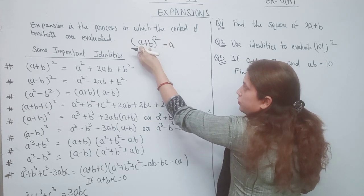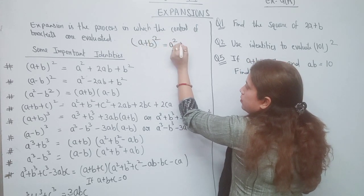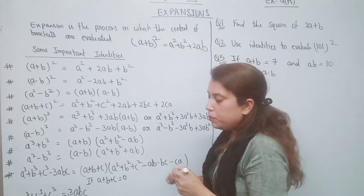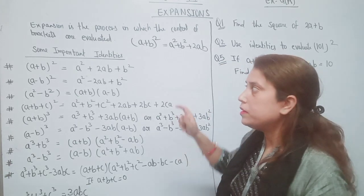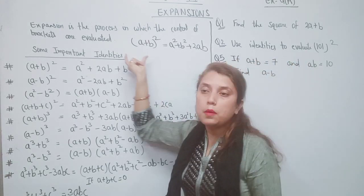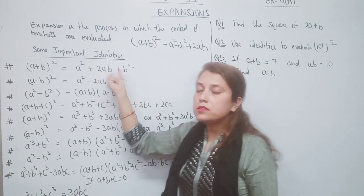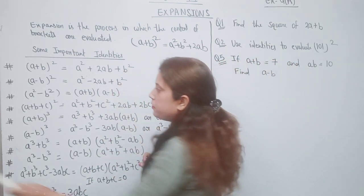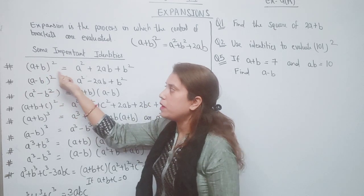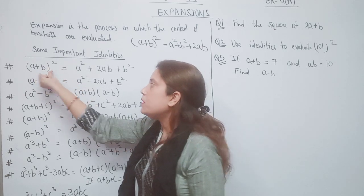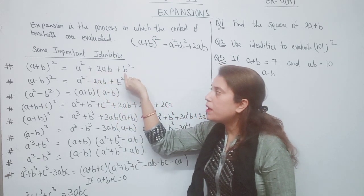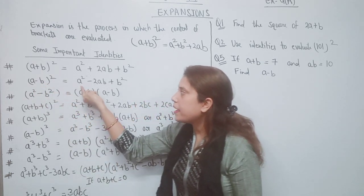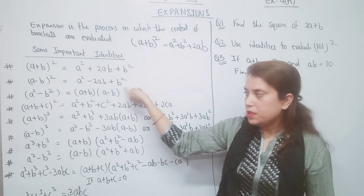The expansion of (a+b)² will be a²+b²+2ab. Now before we start the chapter I am going to discuss some important identities — some you have already read in class 8, some are new. The first identity is (a+b)² = a²+2ab+b². The second identity is (a-b)² = a²-2ab+b².